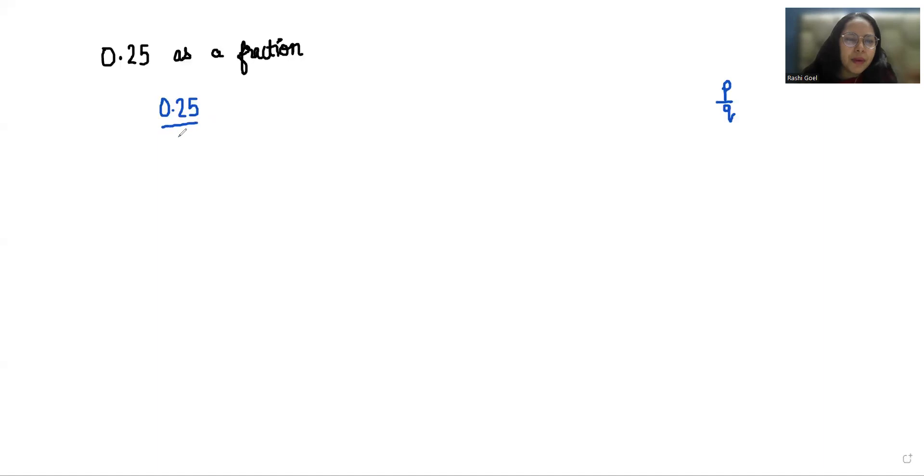To convert to p by q form, I'll take one in the denominator. Now we have to multiply by the number of tens in numerator and denominator depending upon the number of digits after the decimal.